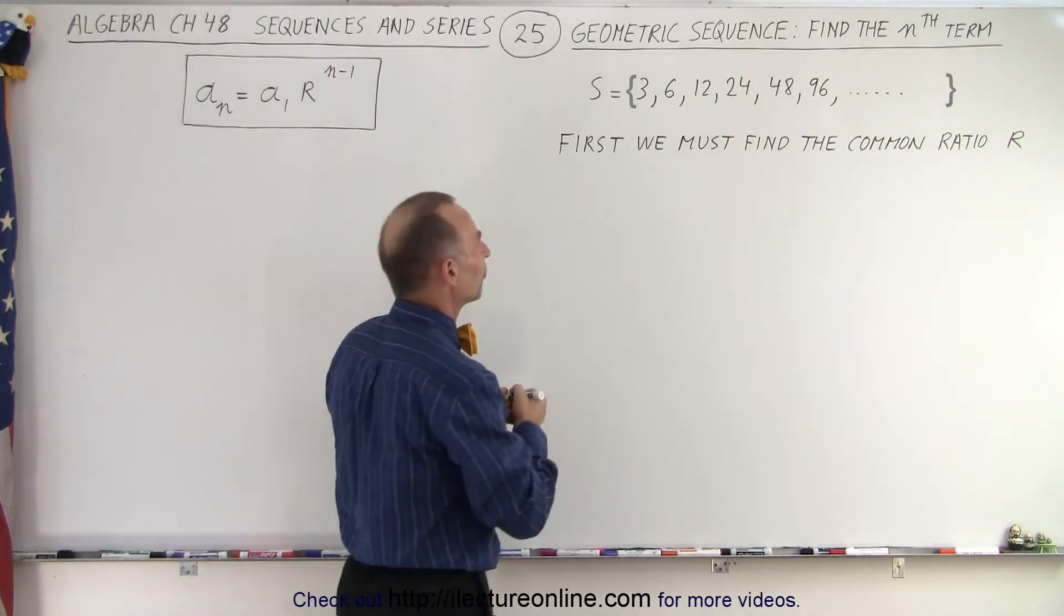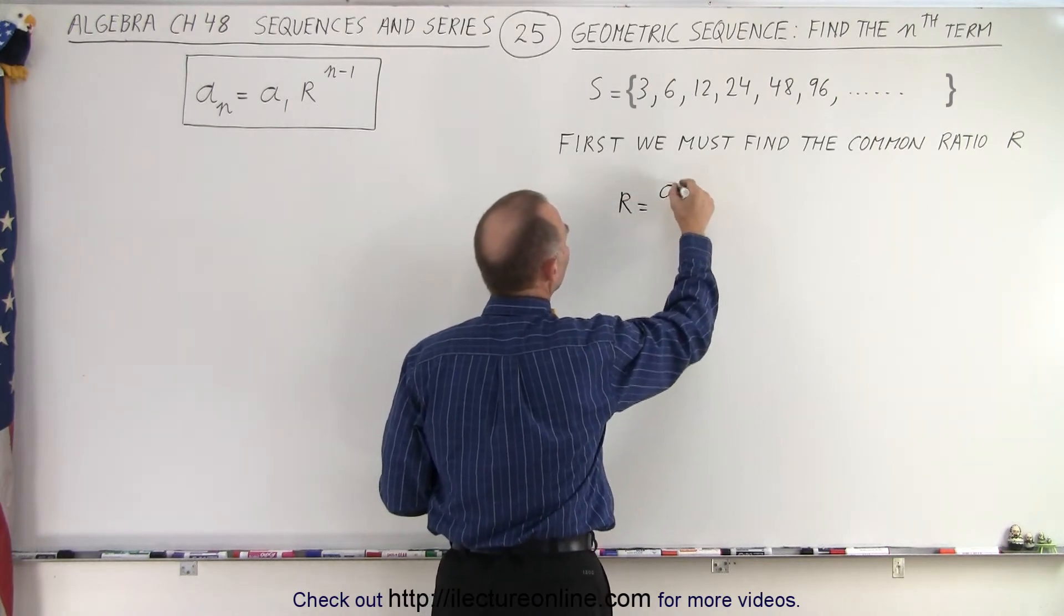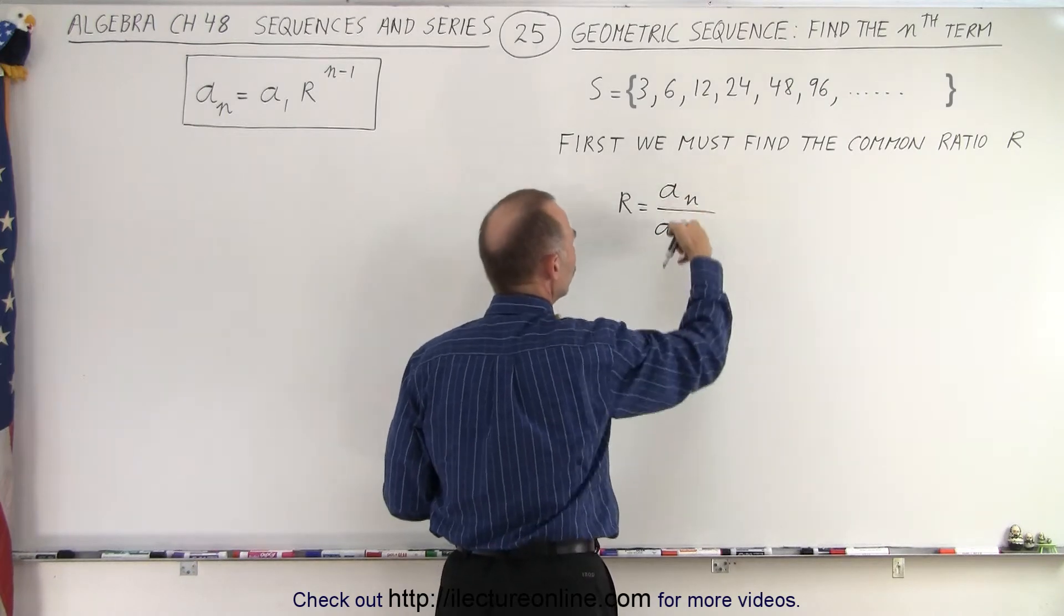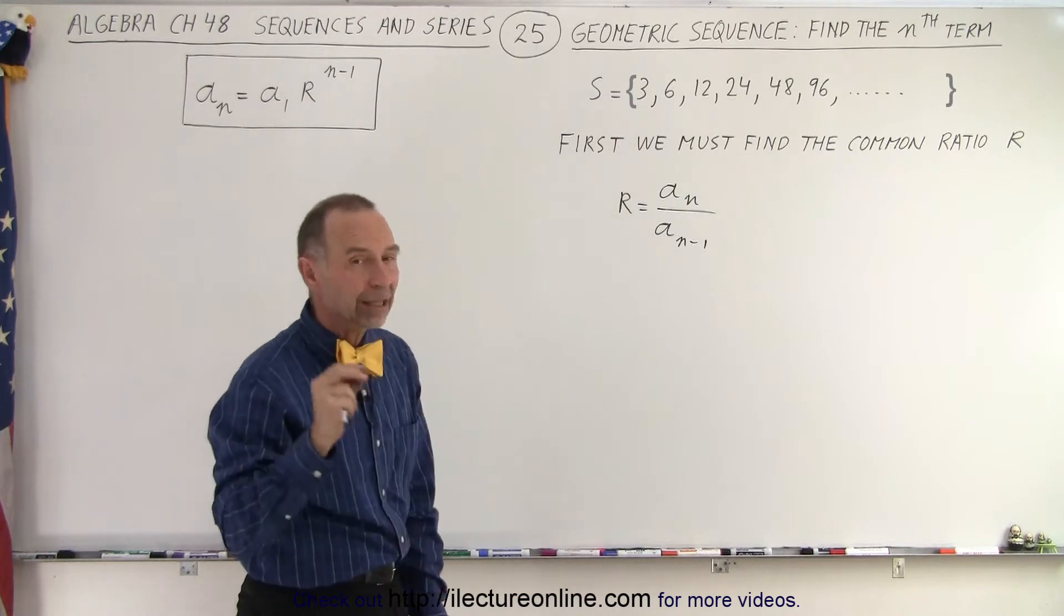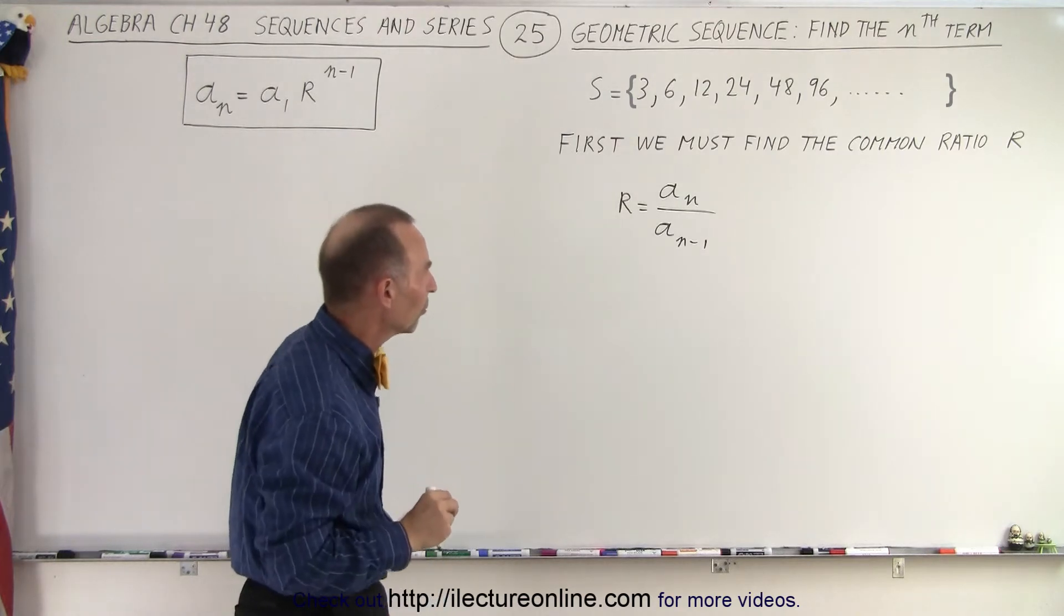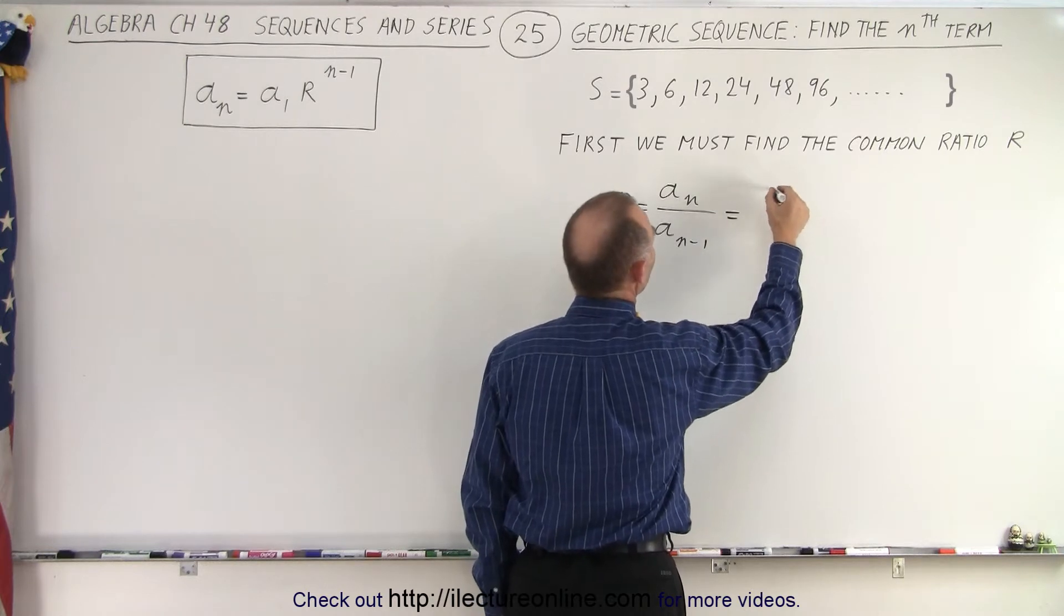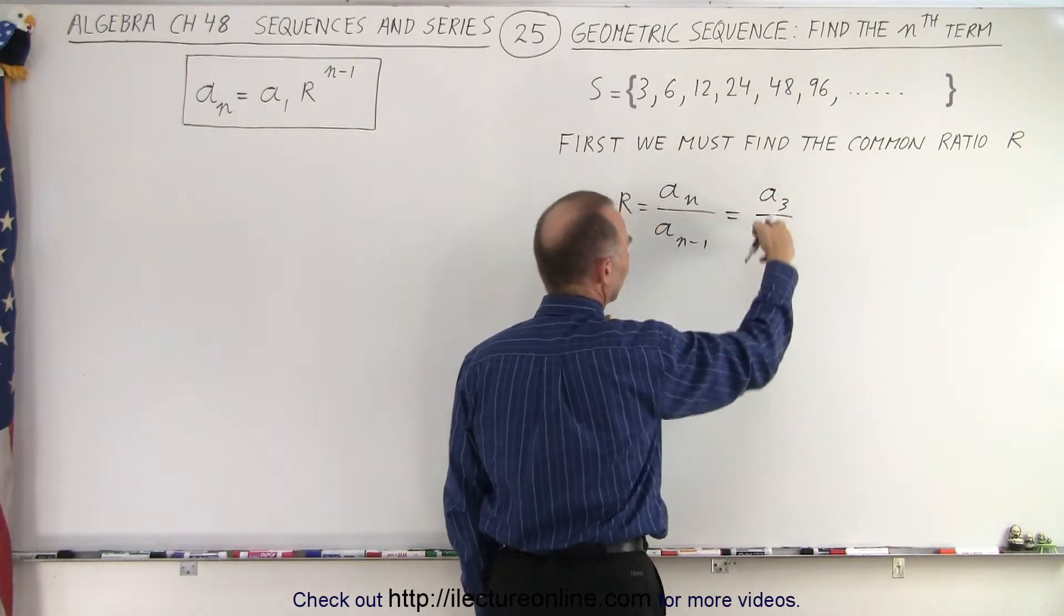So what we can do here is to find the common ratio. We can say that R is equal to a sub n divided by a sub n minus 1. So two consecutive terms in the sequence, take the ratio and that gives you the common ratio of the sequence. So in this case it doesn't matter which ones we take. For example we can take a sub 3 and divide by a sub 2, two consecutive terms.